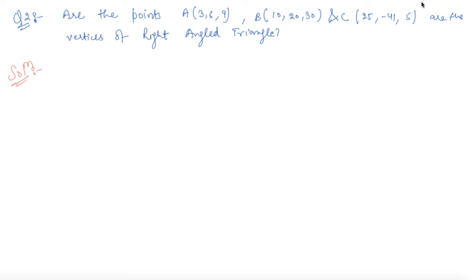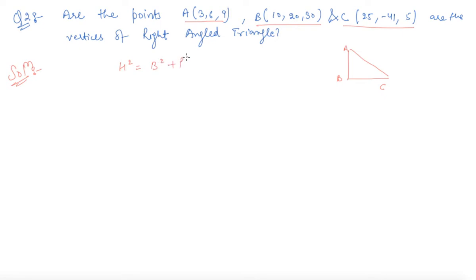In this question, we need to find out whether points A, B, and C are the vertices of a right-angled triangle. If these three points are vertices of a right-angled triangle, the Pythagorean property must hold true: hypotenuse squared equals base squared plus perpendicular squared. So first we will find all the distances.